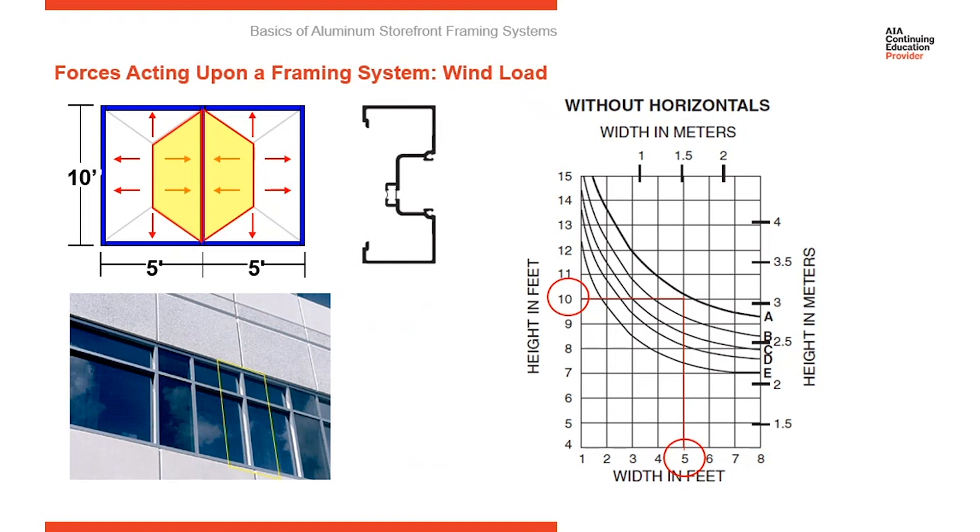They represent different wind loads. A represents 15 PSF. So if our wind load on this project was 15 PSF, we would be fine because where our 5 foot and 10 foot lines meet, that is below or to the left of the curve representing 15 PSF. But if we had 20 PSF now, you can see this frame will not meet that because the intersection of those lines is above the wind load curve representing 20 PSF. So we need to reevaluate something there. So this would fail. This would not meet the wind load.